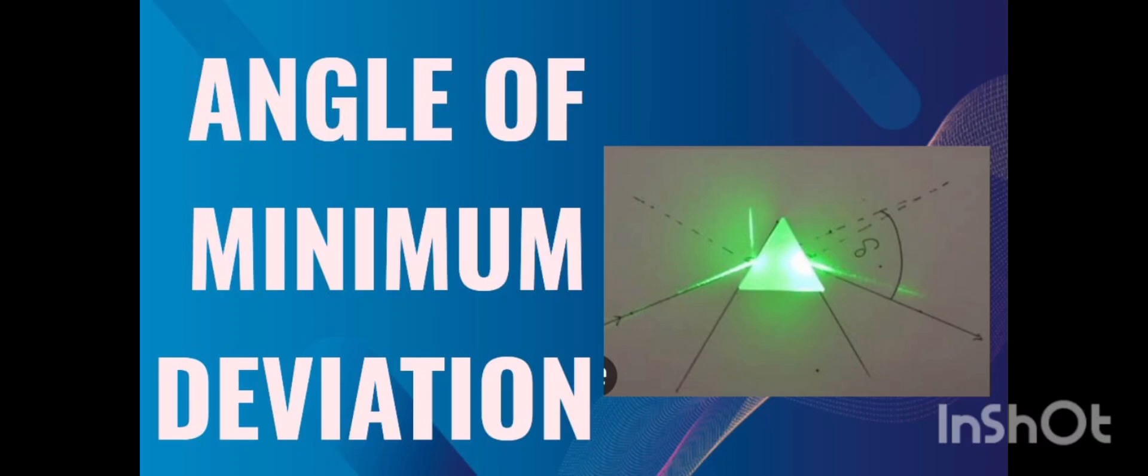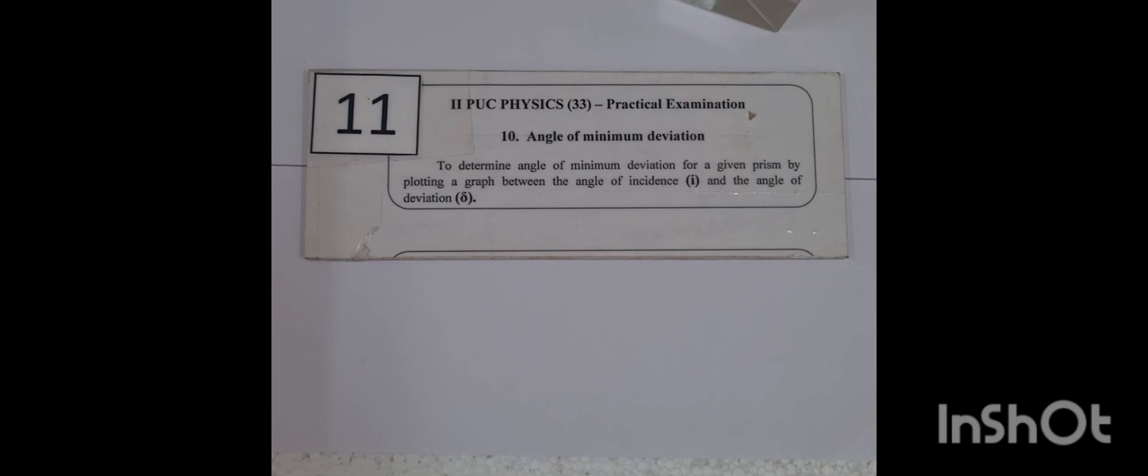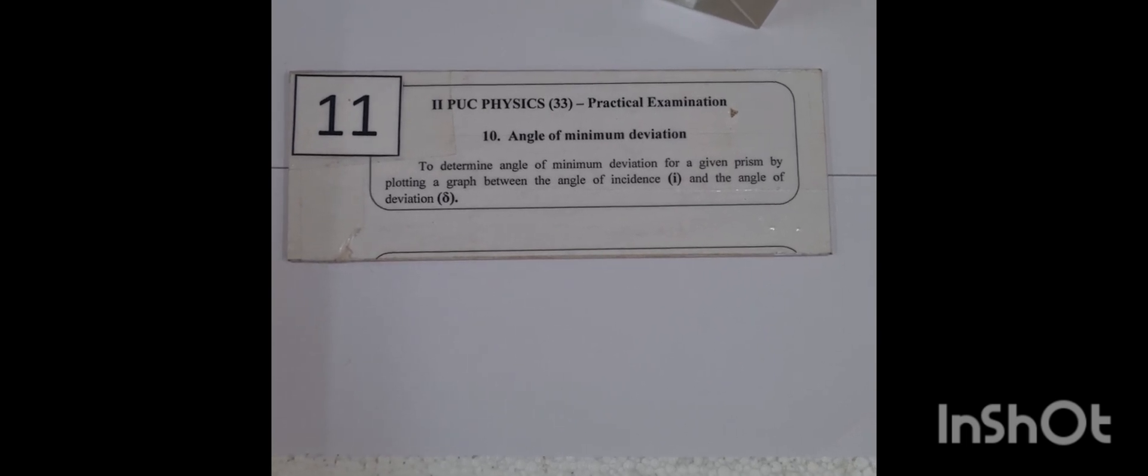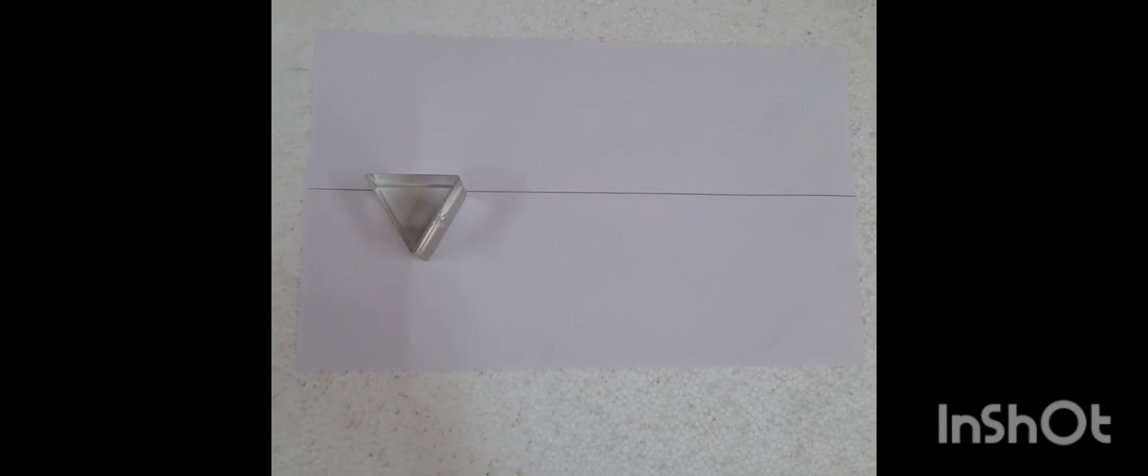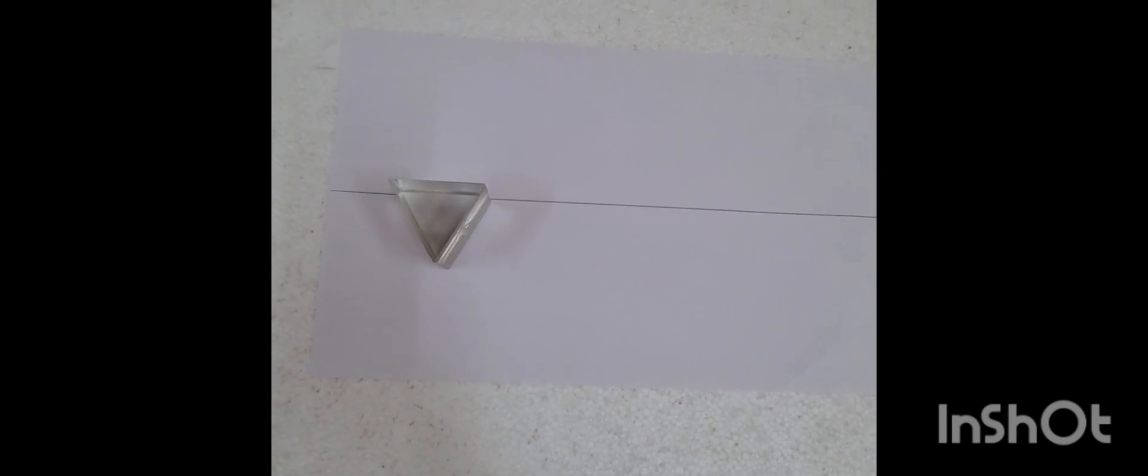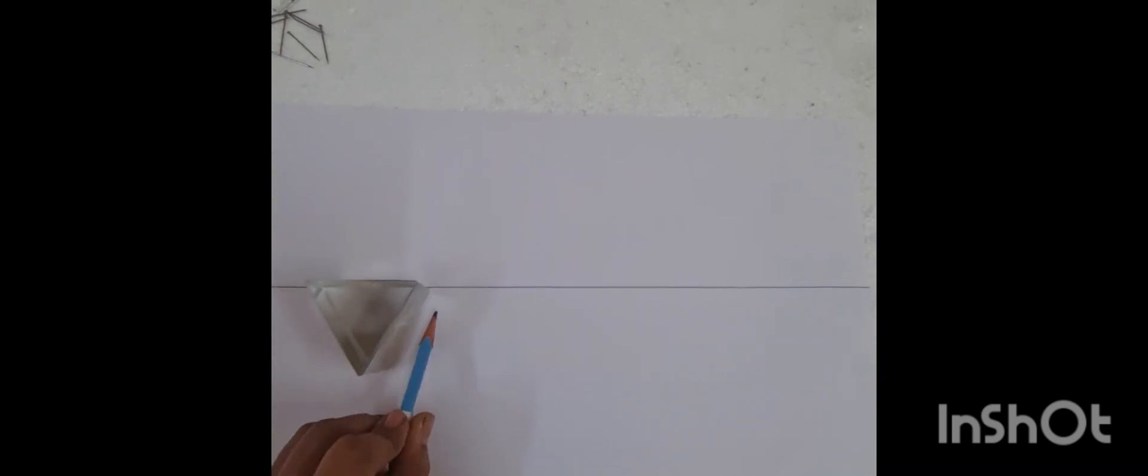Welcome to JSS RSH Physics PU channel. Hello students, the name of this optics experiment is angle of minimum deviation for the given prism. In a white sheet, draw a horizontal line and set the prism by adjusting its edges and draw the outline of the prism.